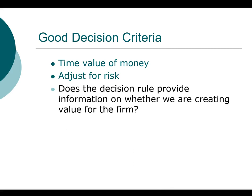Finally, perhaps the most important criterion is whether that particular decision rule gives us information on whether we are creating value for the firm. Remember, the ultimate goal of a financial manager — and any manager for a firm — is to increase the overall value of the firm in the long run. The best way to illustrate these different criteria is through an example. In the next video, we're going to go over a comprehensive example demonstrating how we can apply all these different decision criteria.